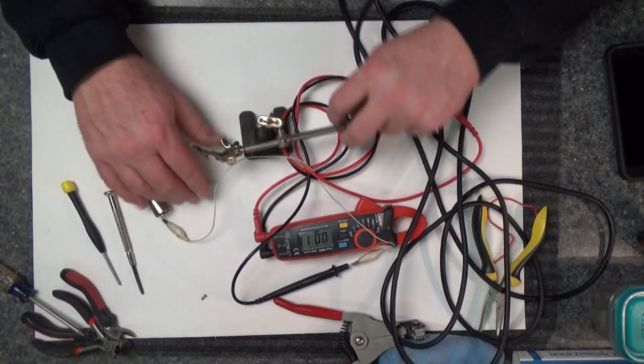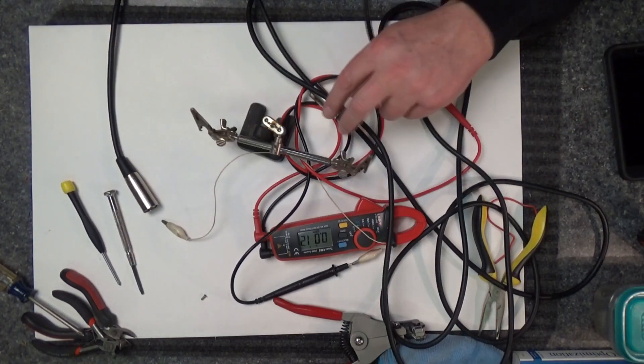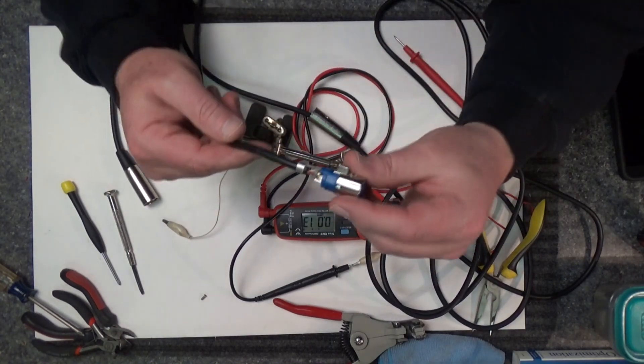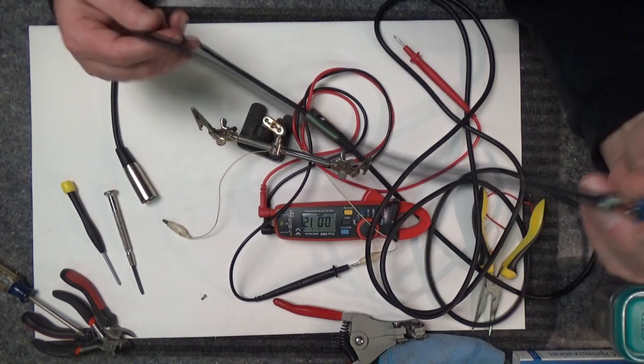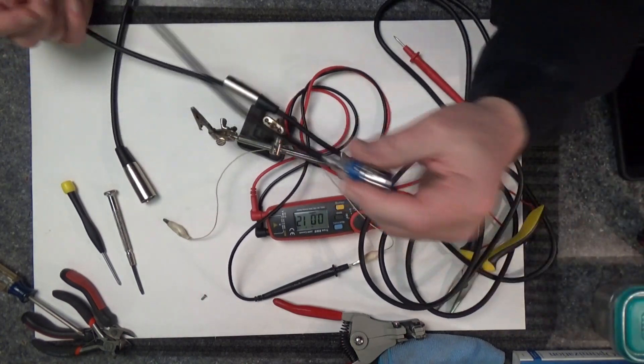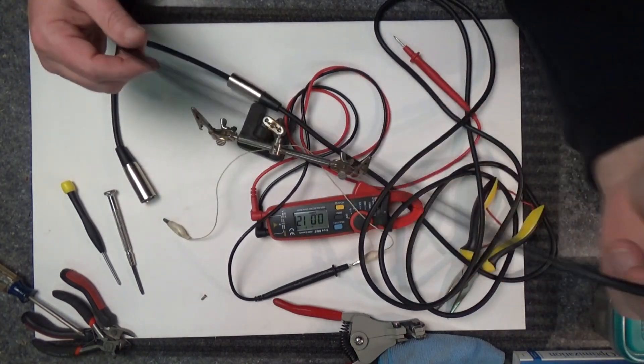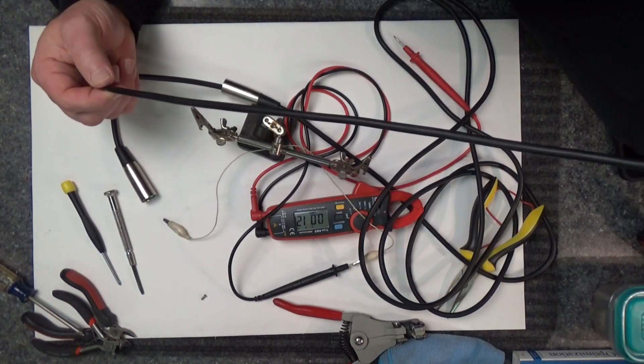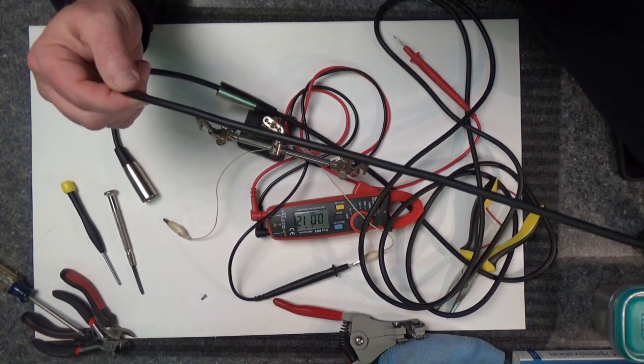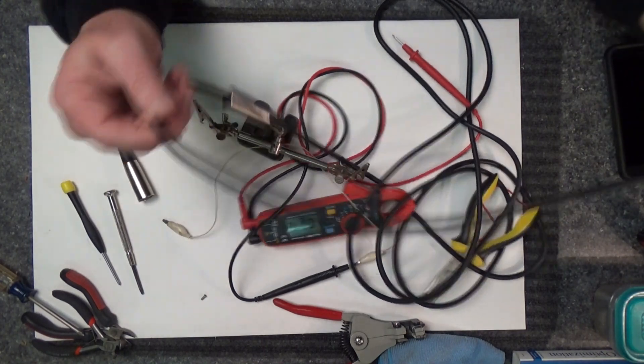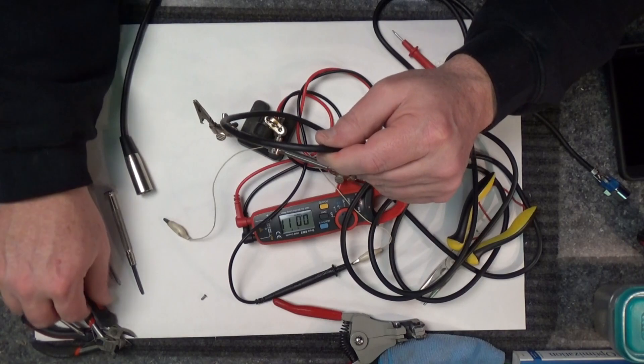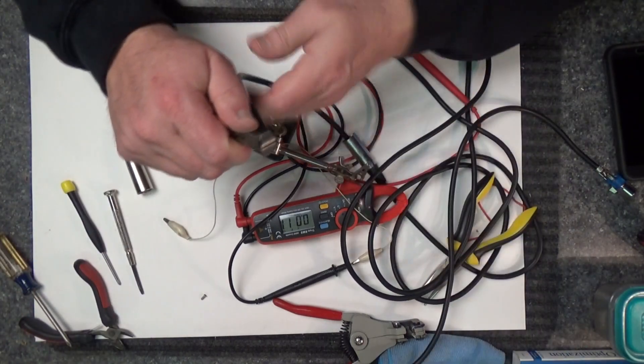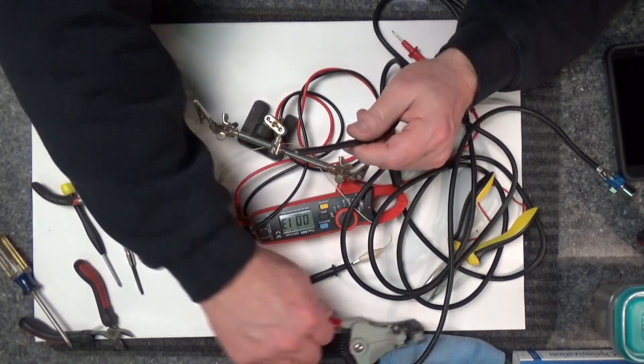So what you can do is blindly start taking some length out of this thing and testing it before you put the end on. So here's our wire, we know it's somewhere along this length. I'm going to start by taking fairly good chunk out of it. I already inspected the wire and I didn't see anything that looks suspicious. I'm going to go ahead and cut it right here.